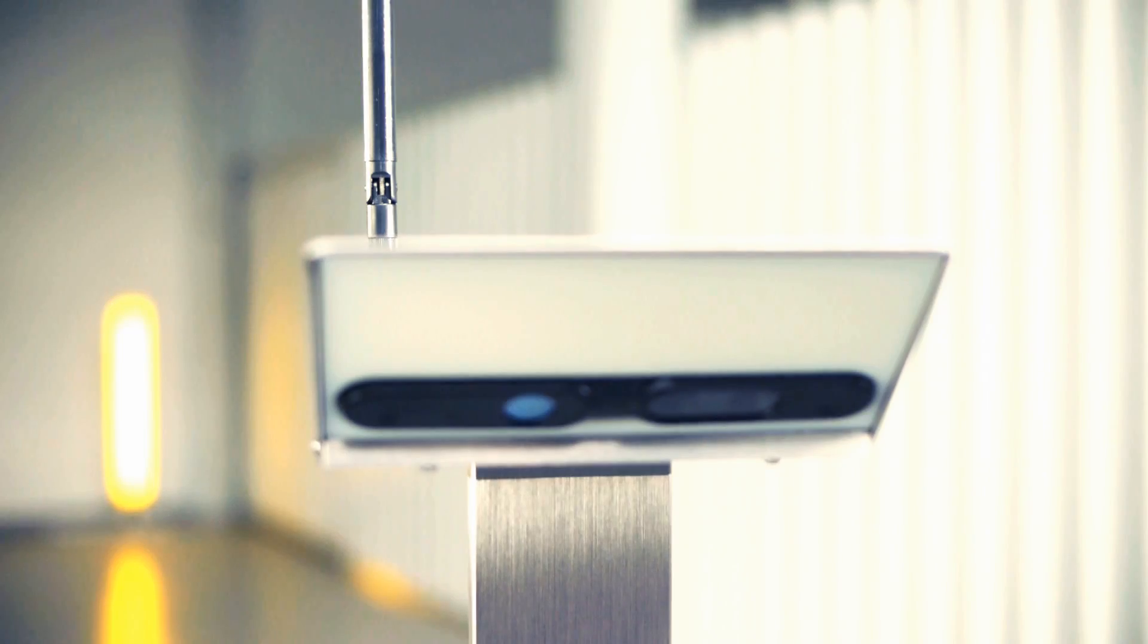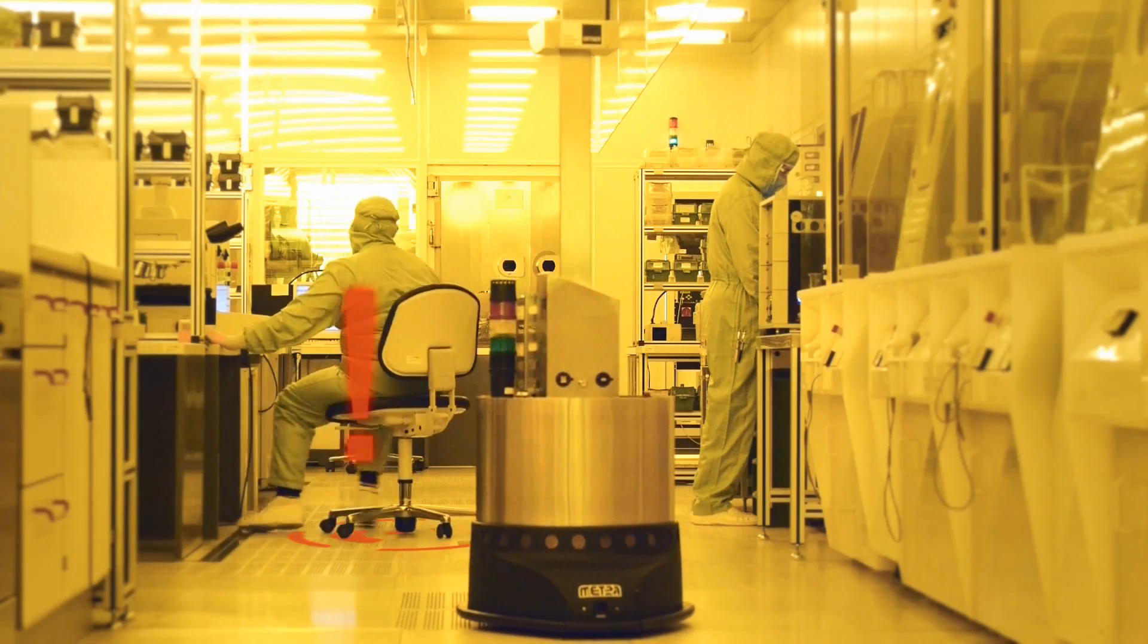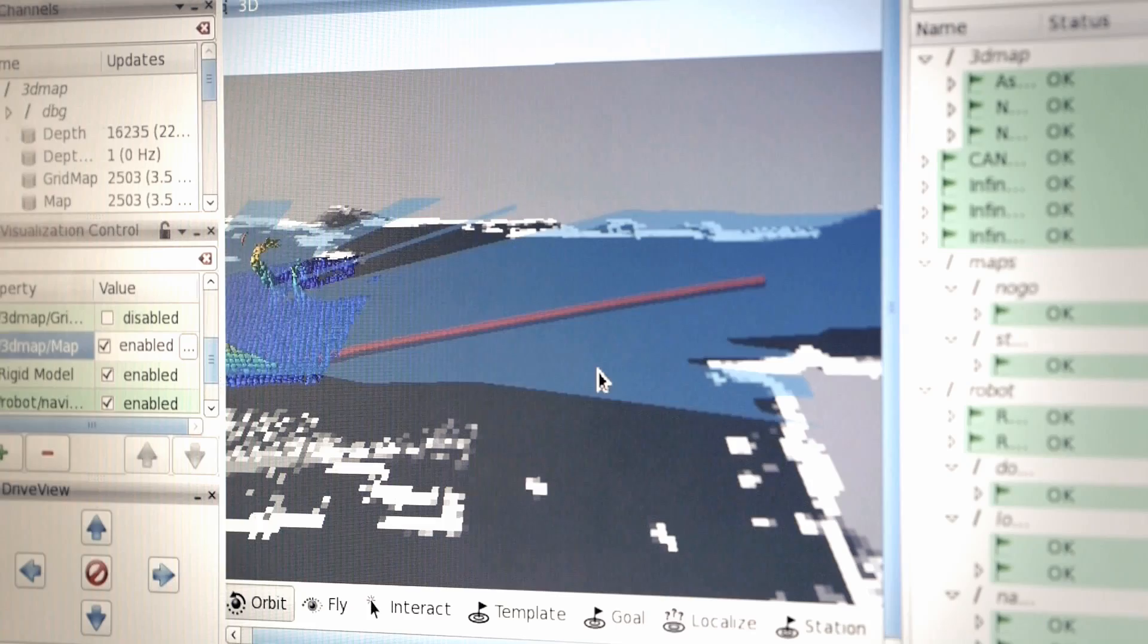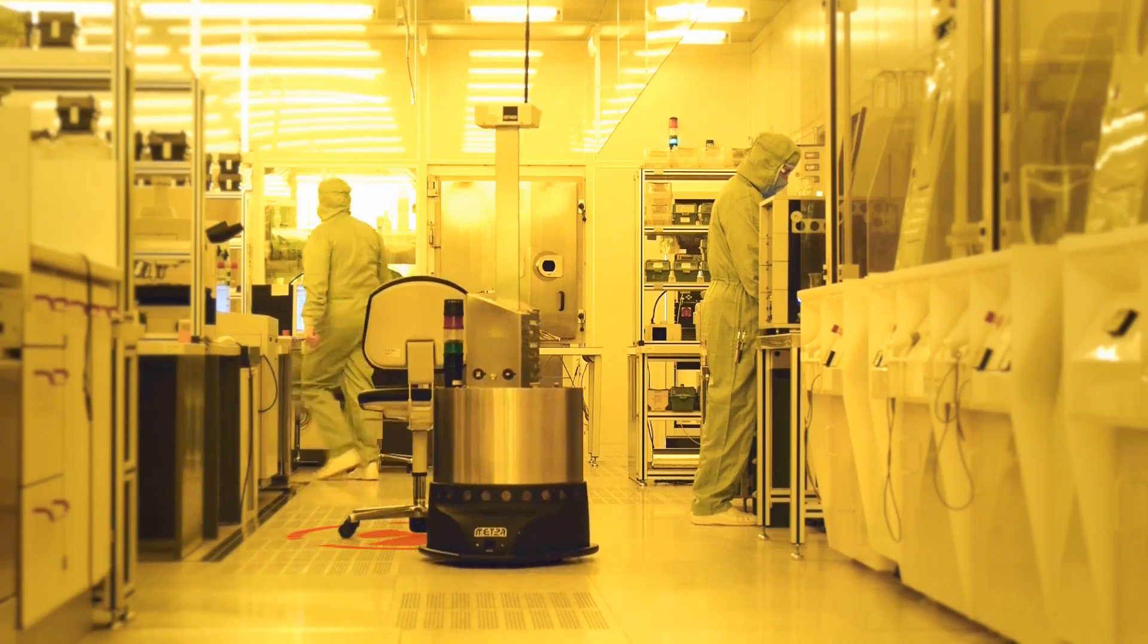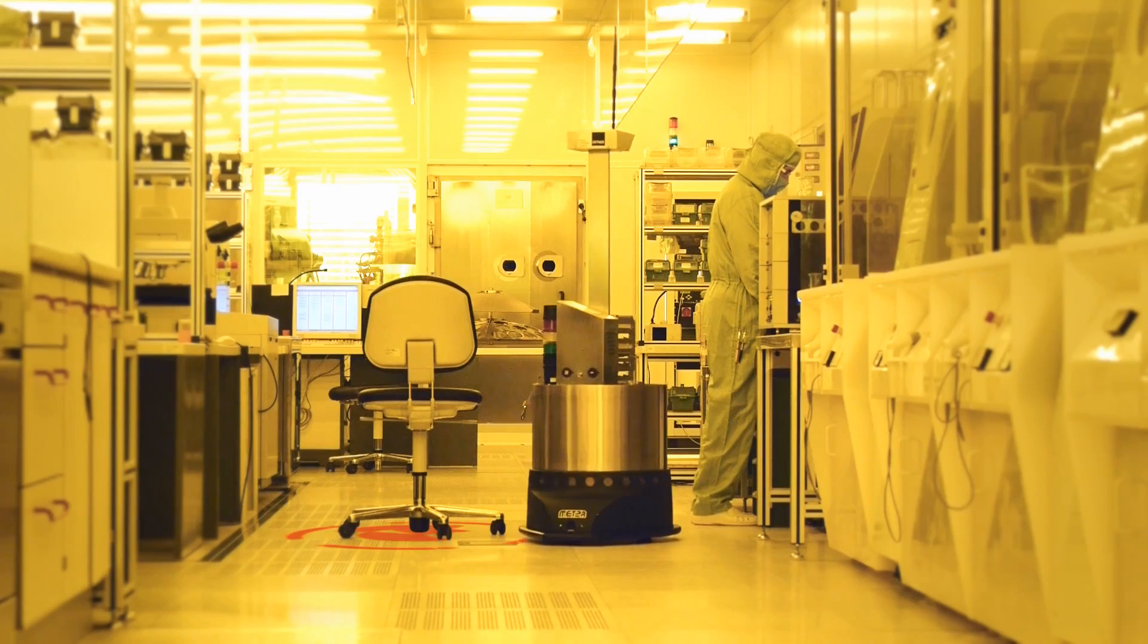Scout operates safely in areas where people and machines work together very closely. The integrated 3D sensor records its environment automatically in real-time. It detects obstacles, missing floor panels, or operators, and will bypass them autonomously.